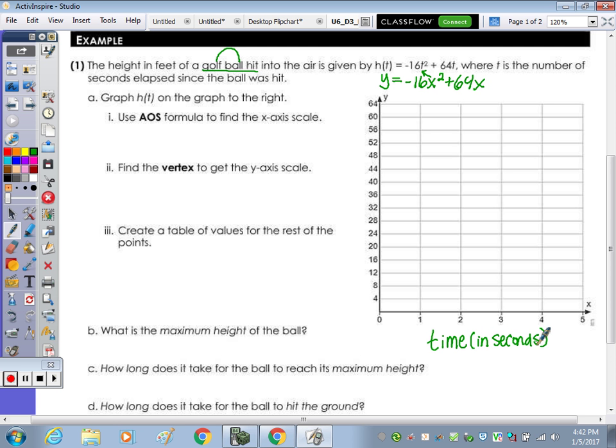So our x-axis is the t, or time. So let's label our x as time in seconds, and the h(t), or y, h is our height. And that's in feet. So the height, our y-axis is dependent on the x-axis, or the amount of time that has passed since the ball was hit. Part one, use the axis of symmetry formula to find the x-axis scale.